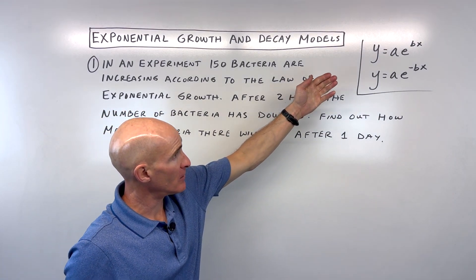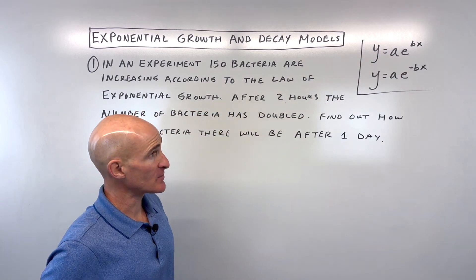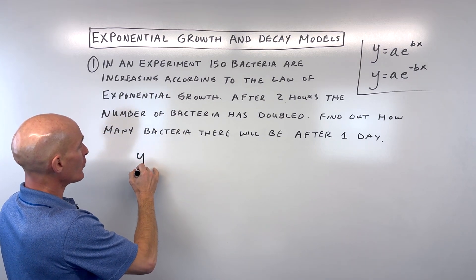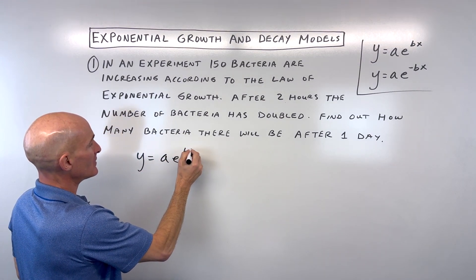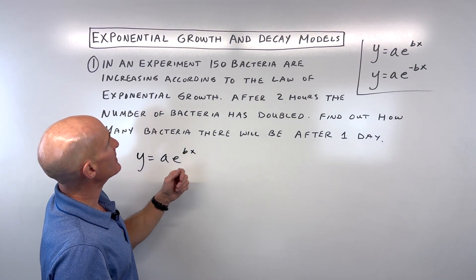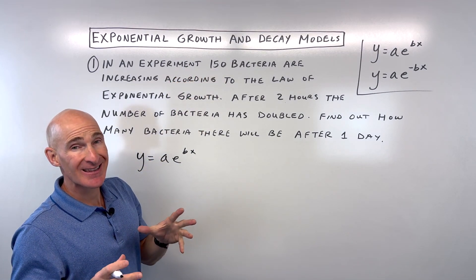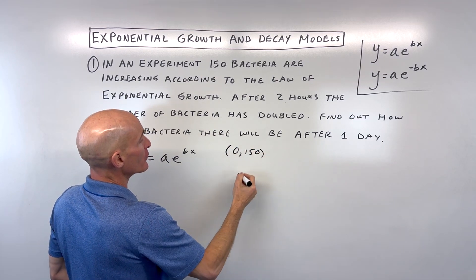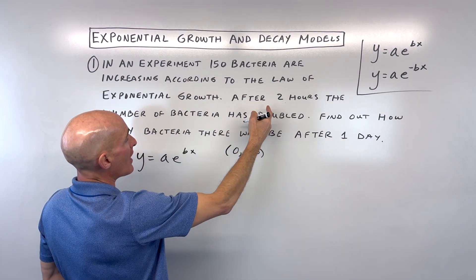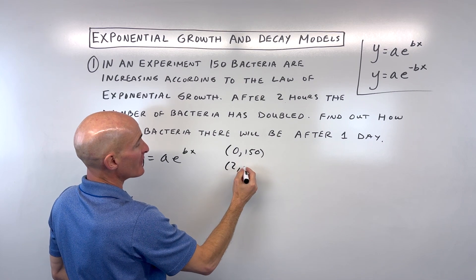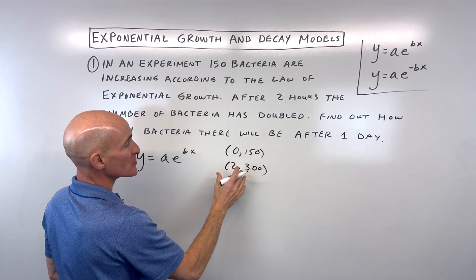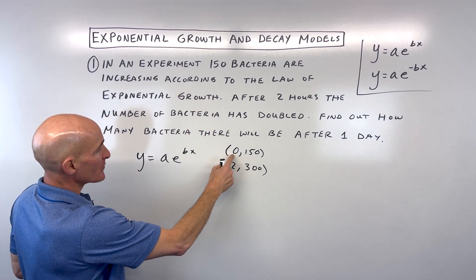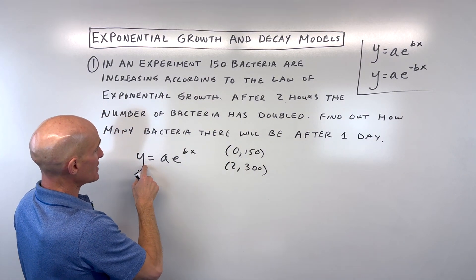If we're working with exponential growth, let's start with y equals ae to the bx. Notice we're starting with 150 bacteria at time zero, so that's the point zero comma 150. After two hours the bacteria doubled, so we have 300 bacteria. That's the point two comma 300. Let's start with this first point where x is zero and y is 150.